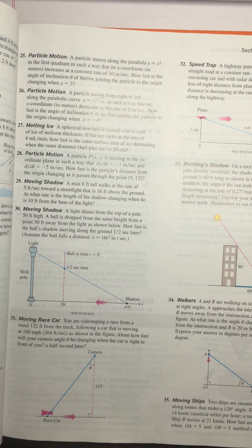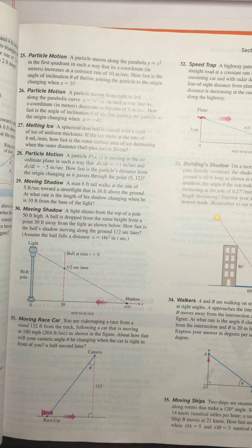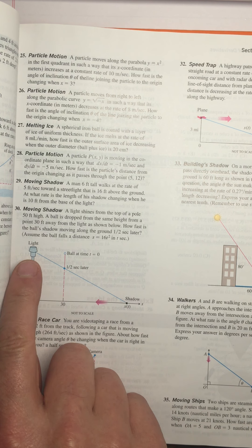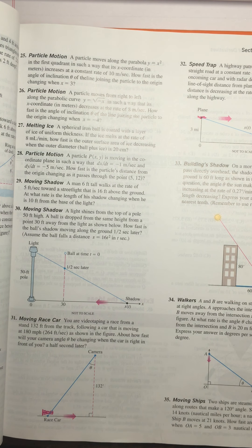People who write related rates problems really like shadows. And they really like the shadows of light poles, and usually somebody's walking toward the light pole or walking away from the light pole.